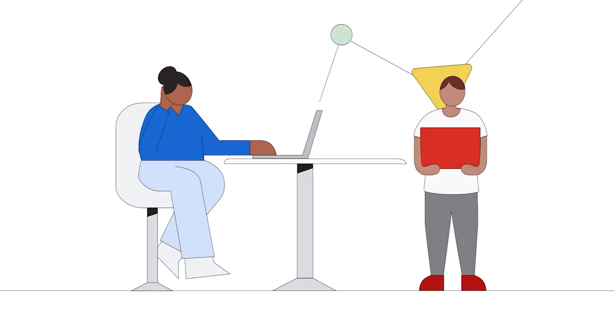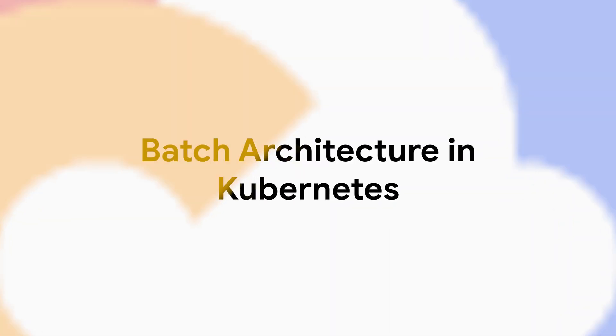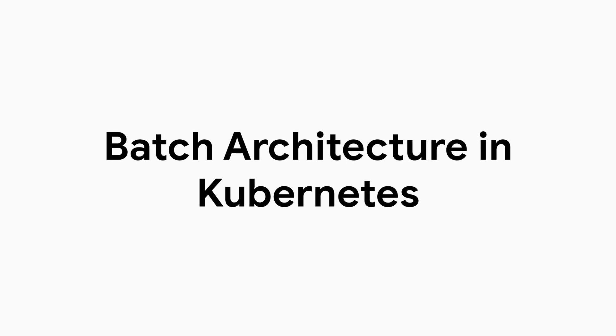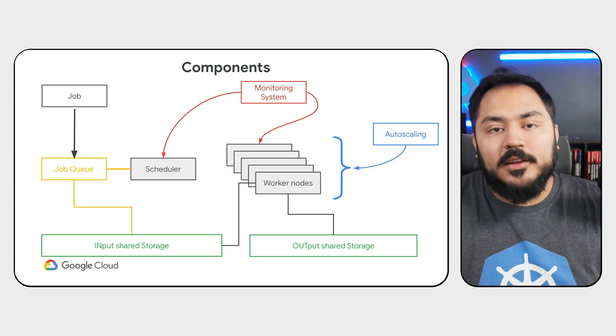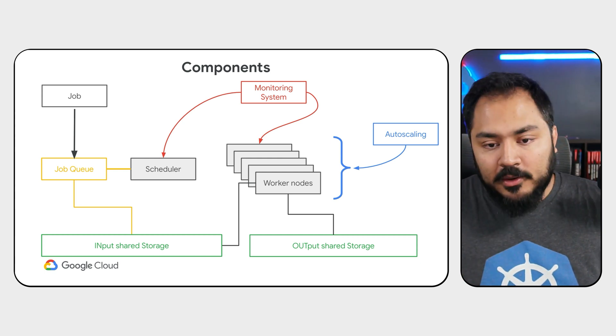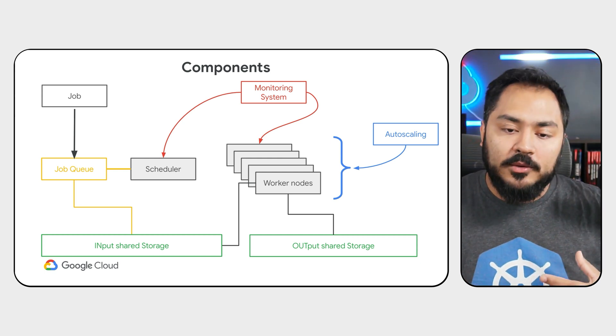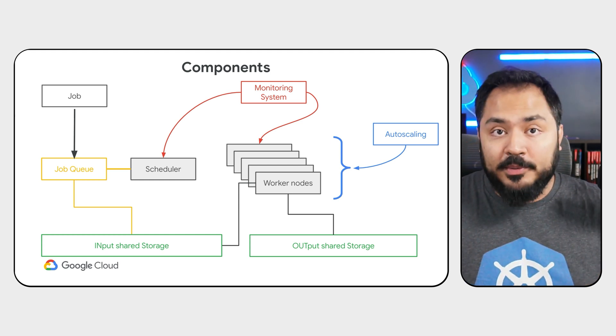In the previous video, we looked at what a batch platform for HPC looks like in general. We looked at this particular diagram where we had a job that goes through a queue, gets scheduled by the scheduler to our worker nodes, and we had storage to handle both the input and output of our workload.